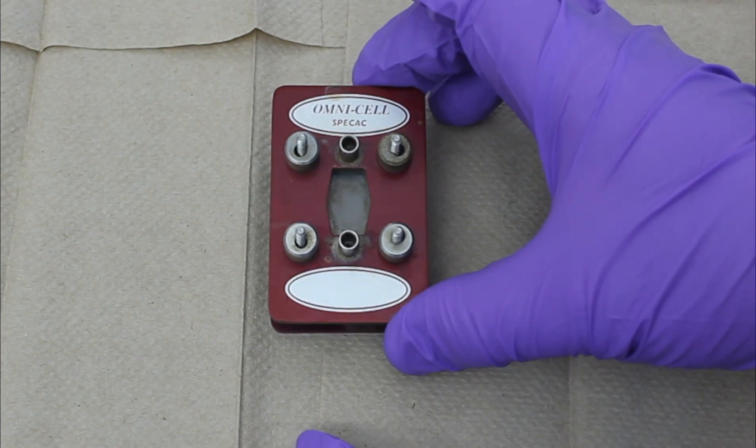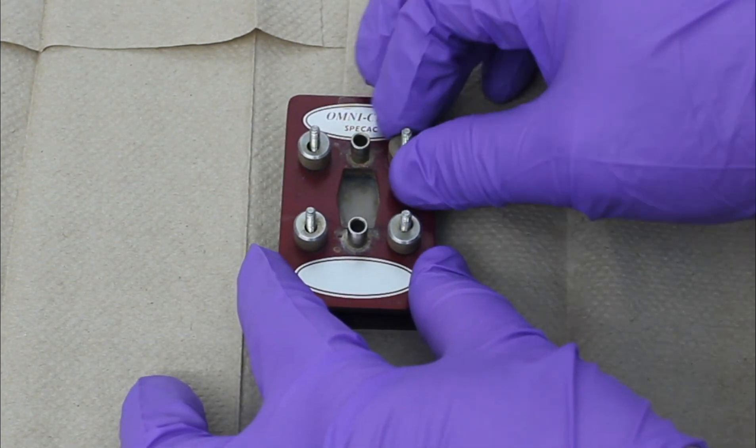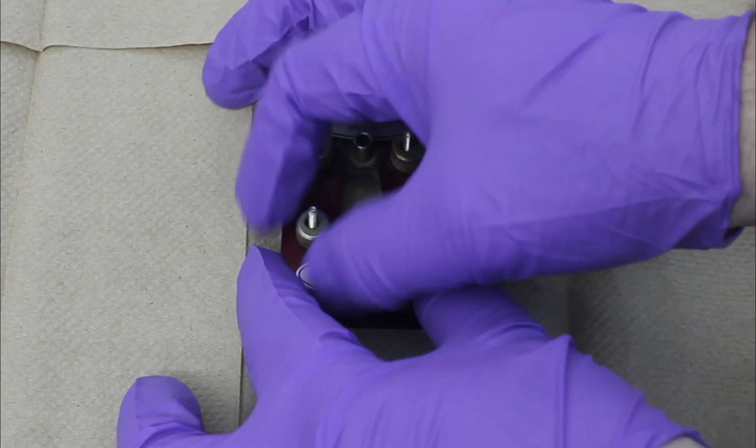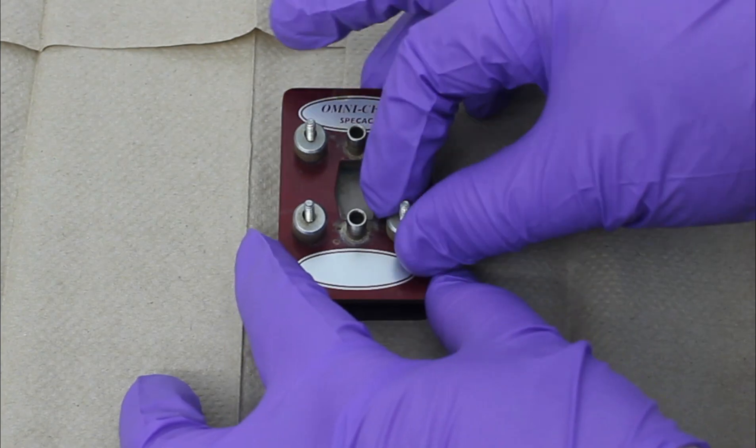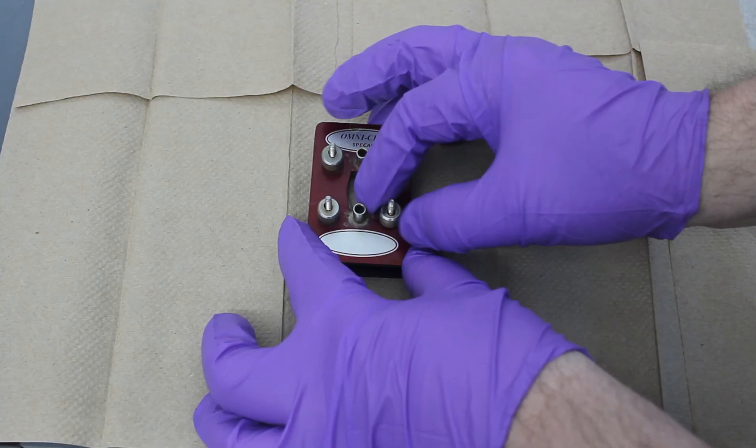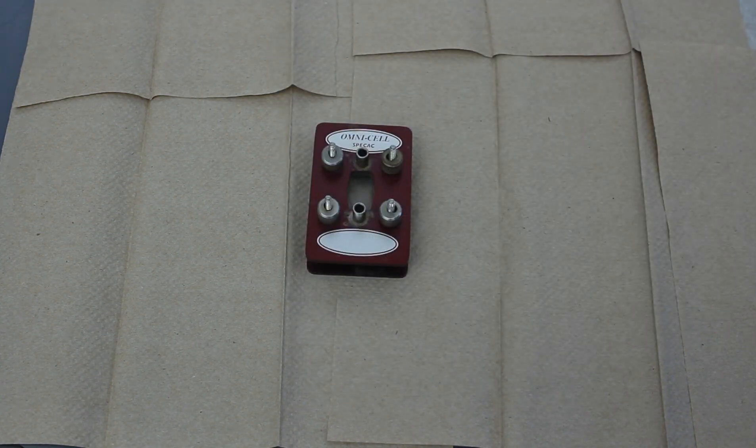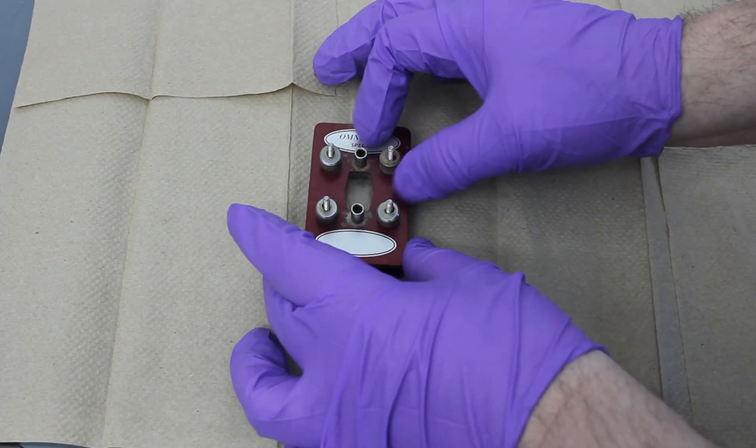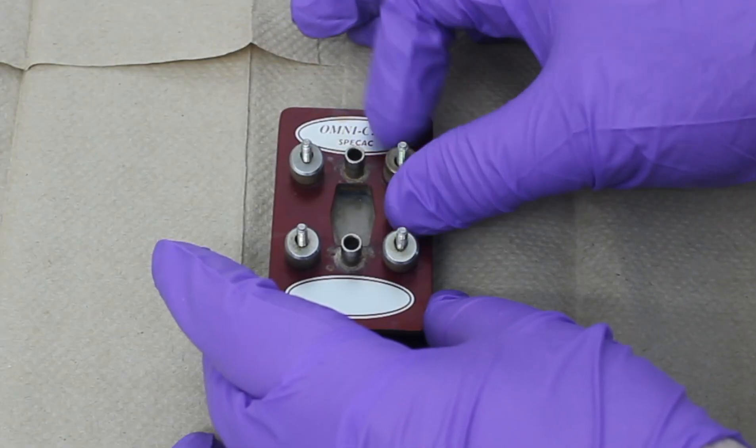This is actually the cell after it's been cleaned up a little bit. So what I'm going to show is how to tear down the cell. When you buy a cell like this, it will have an instruction manual with all the parts and pieces. Make sure you keep that or have it for reference, even if you have to look it up online.